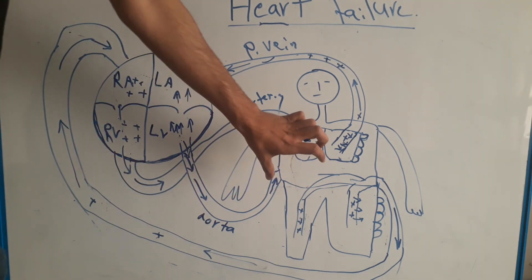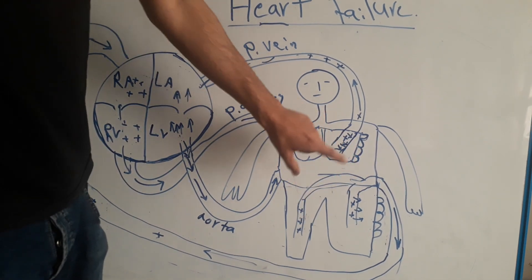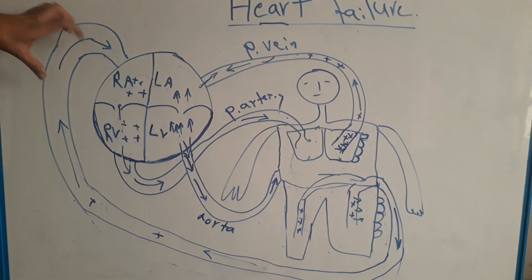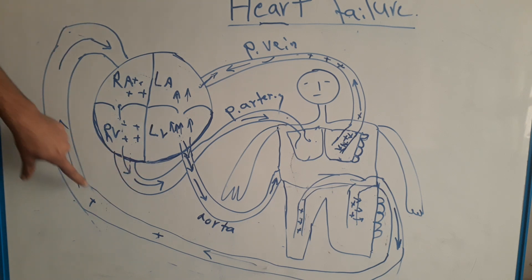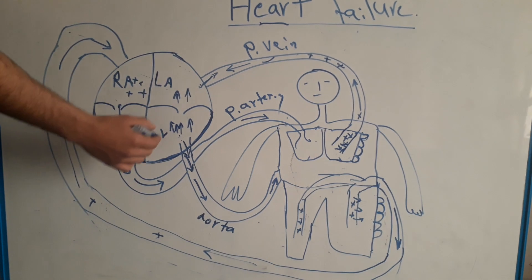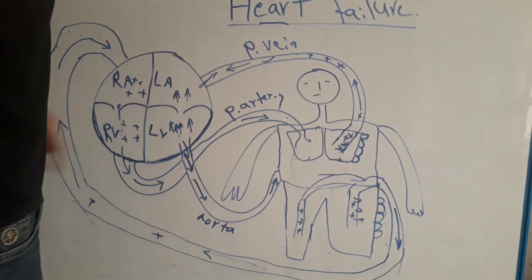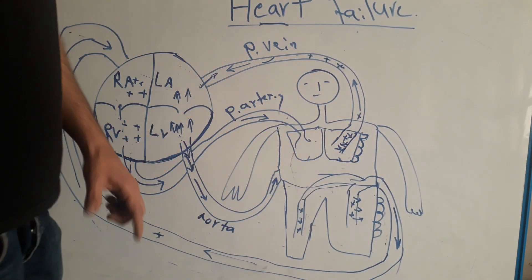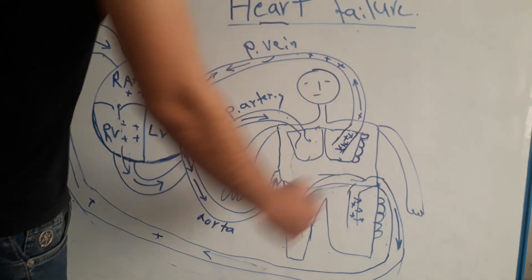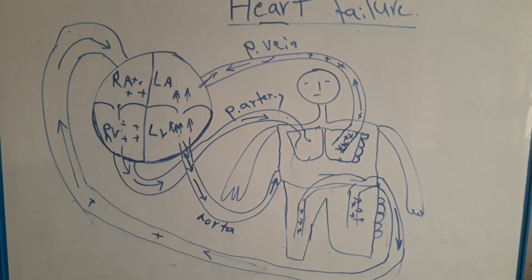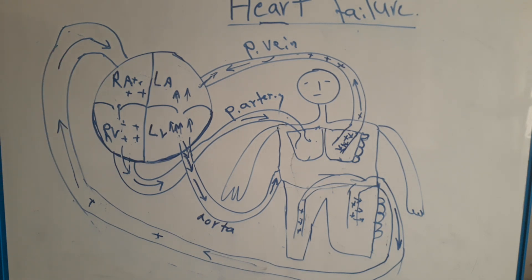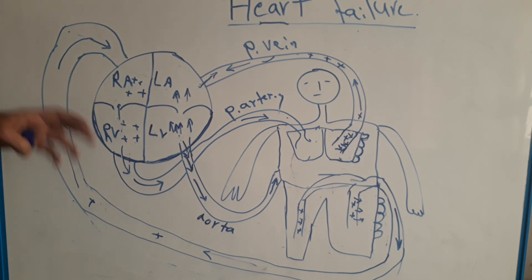In right heart failure, the patient presents with generalized body edema — especially leg edema — and hepatomegaly due to increased hydrostatic pressure inside the veins. In left ventricular failure, increased hydrostatic pressure in the pulmonary veins causes pulmonary edema as fluid passes from the pulmonary veins into the lung interstitium. That's all about heart failure — a short explanation. Thank you for watching; please subscribe to get all videos for easy and quick understanding.